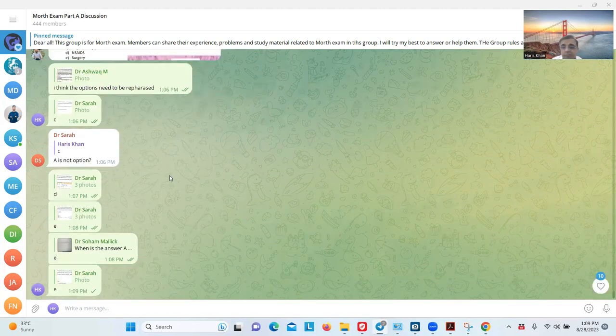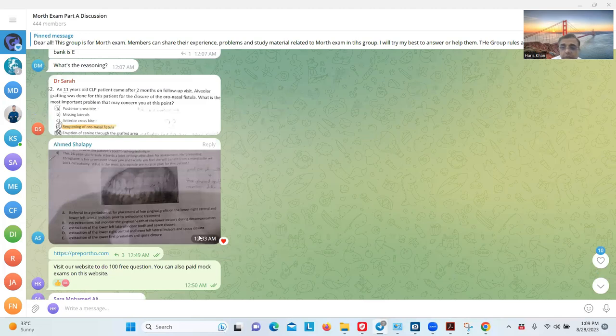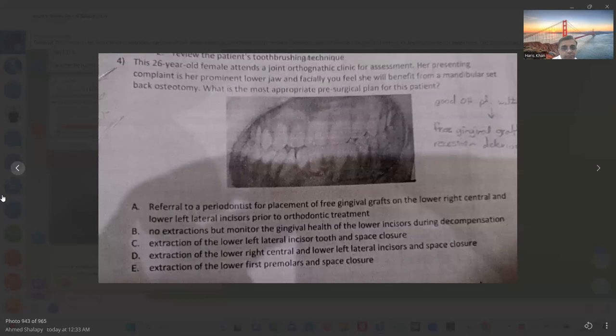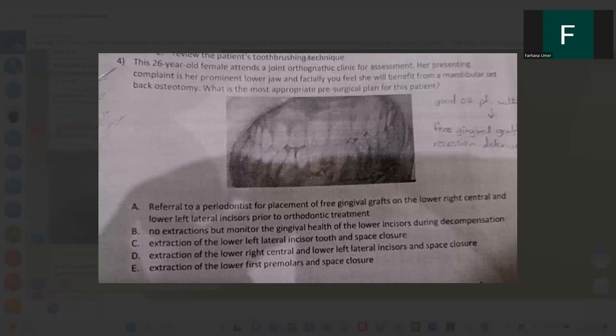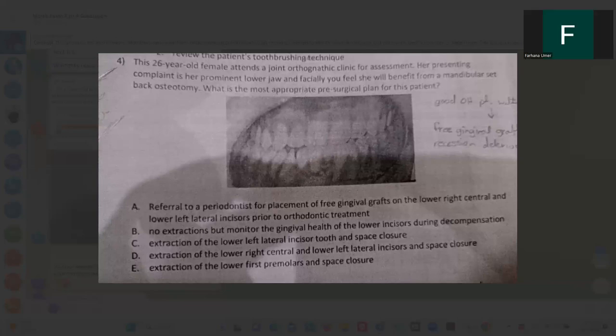I have discussed this MCQ with you, and you told me that we should go for the reopening of the oro-antral fistula. So I said infected canine—even in the last discussion we said infected canine. Sir. A 26-year-old female patient came to your orthognathic clinic. Her presenting complaint: prominent lower jaw. Finally, you feel she will benefit from mandibular setback osteotomy. What is the most appropriate procedure for this patient from the front pictures? So there is gingival recession on her lower incisors. If I do not see a lot. Gingival grafting done before placement of fixed appliance on the lower incisor and central incisor. There is mild crowding. Non-extraction but monitor the gingival health.